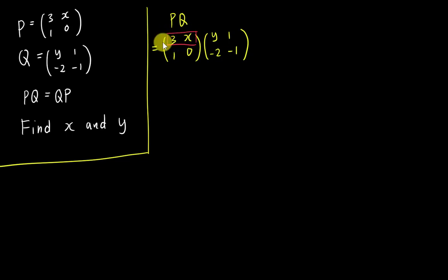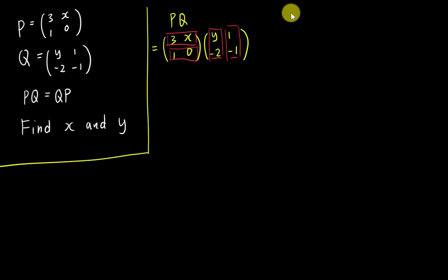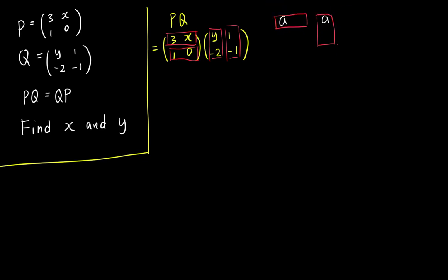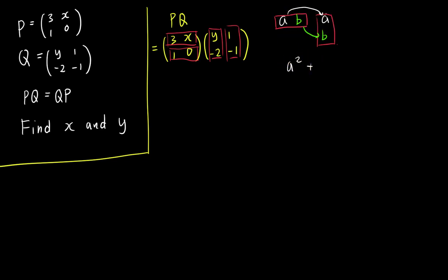When you do the multiplication for matrices, the first matrix — you always divide them into horizontal boxes. For the second matrix, you always draw vertical boxes. Then when multiplying, the first number multiplies with the first number, and then the second number multiplies with the second number. Just imagine A multiplied by A gives you A squared, then plus B multiplied by B gives you B squared.